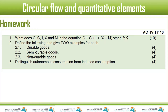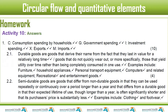Then we went in depth with question number three in the previous lesson: distinguish autonomous consumption from induced consumption. Autonomous consumption is consumption that is not affected by the level of income, whereas induced consumption is that which is affected. Other examples for semi-durable goods include clothing and footwear.